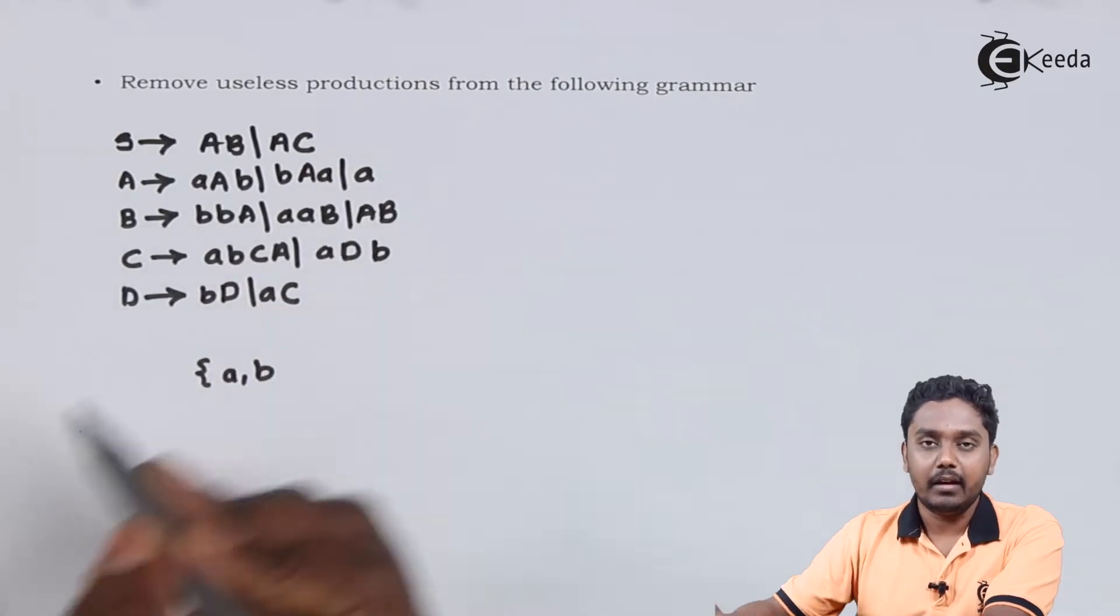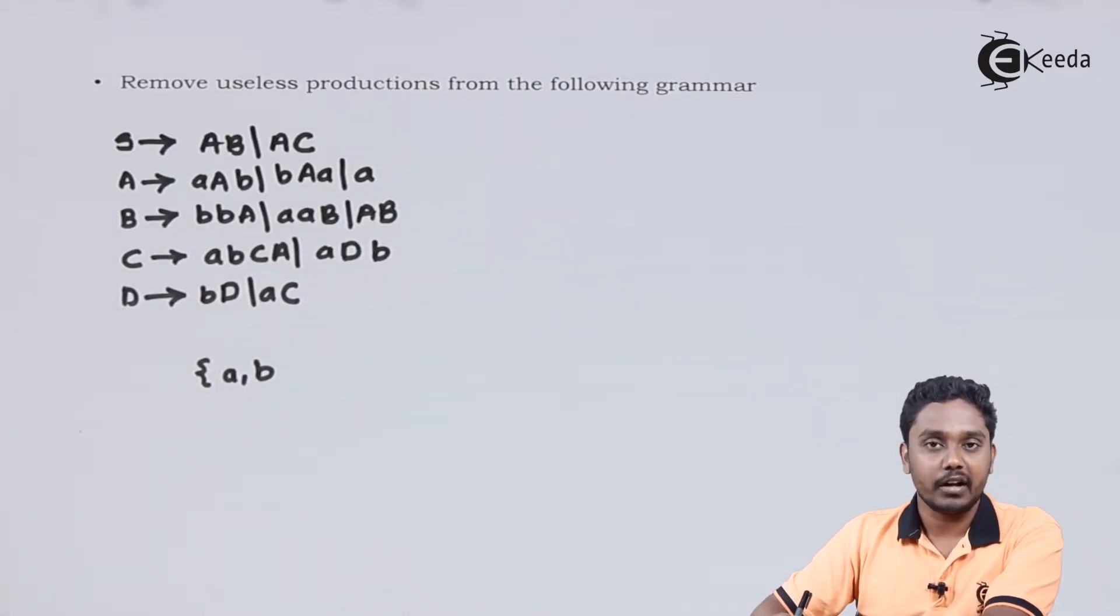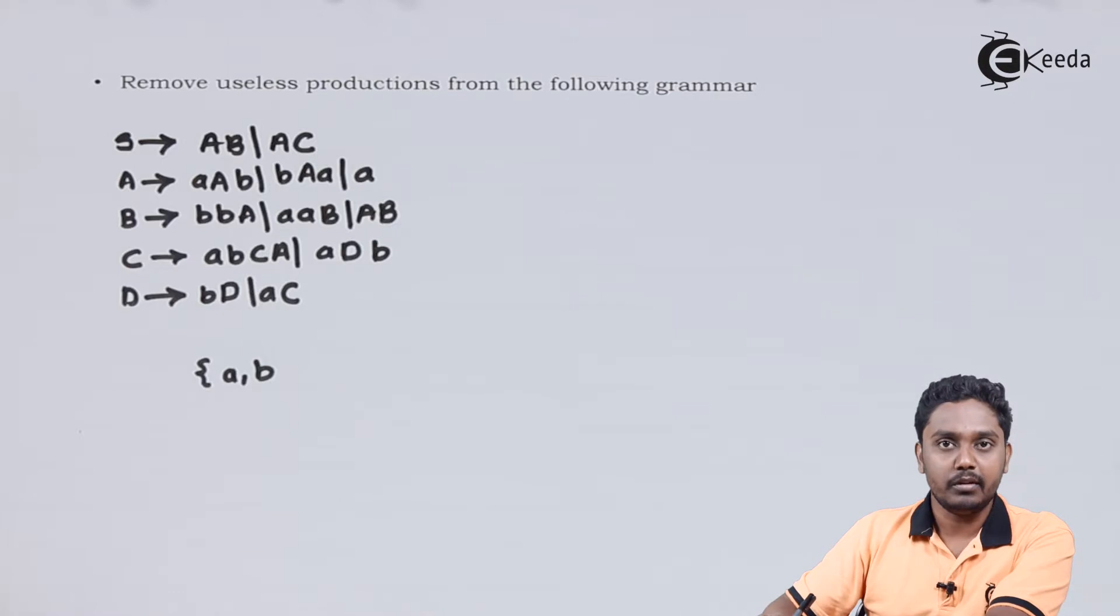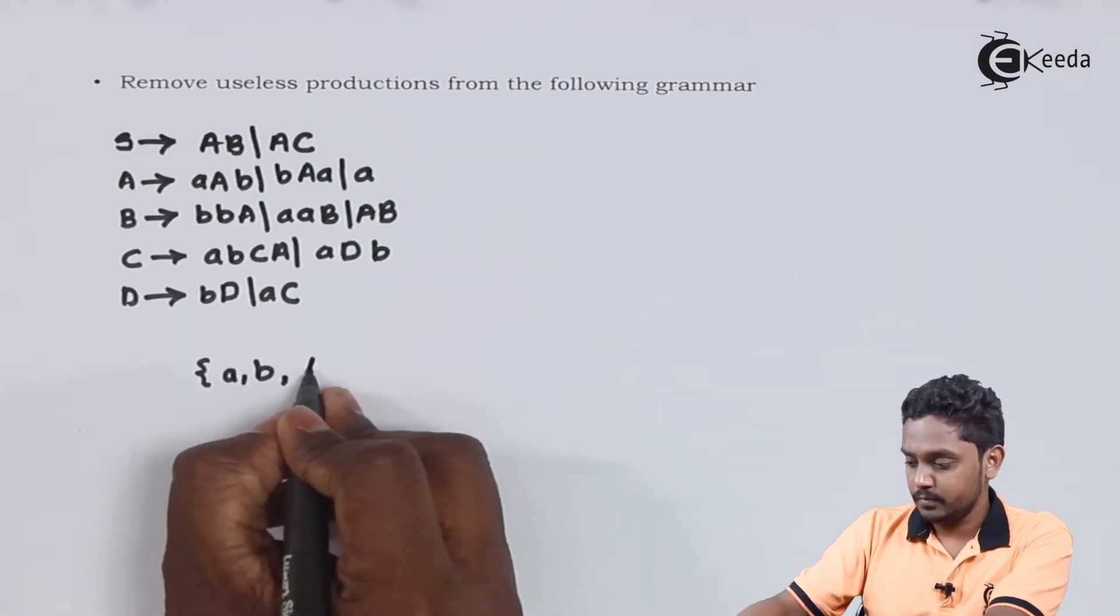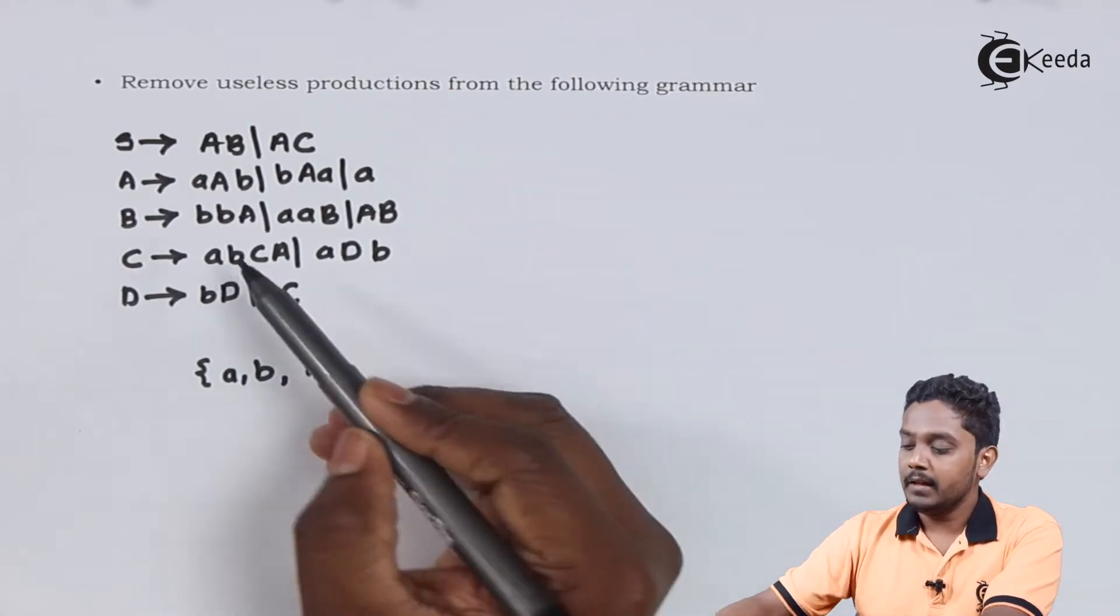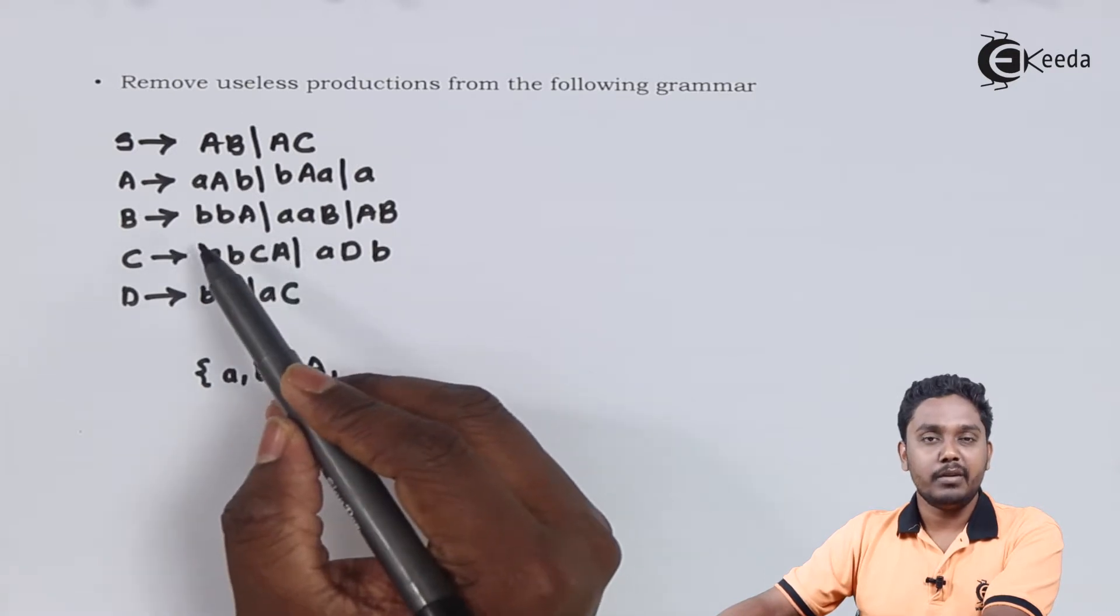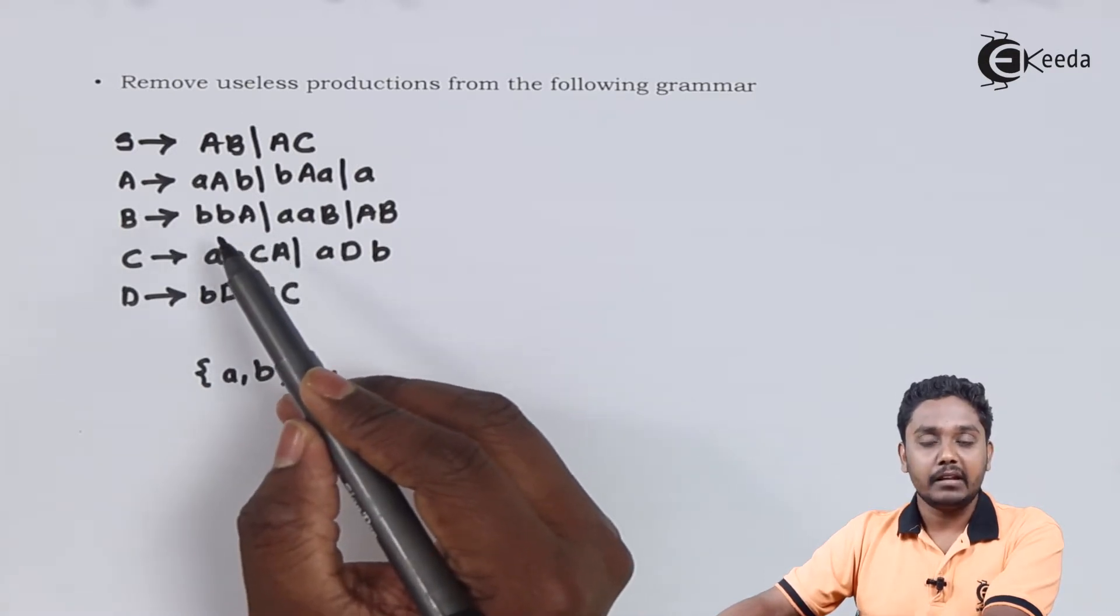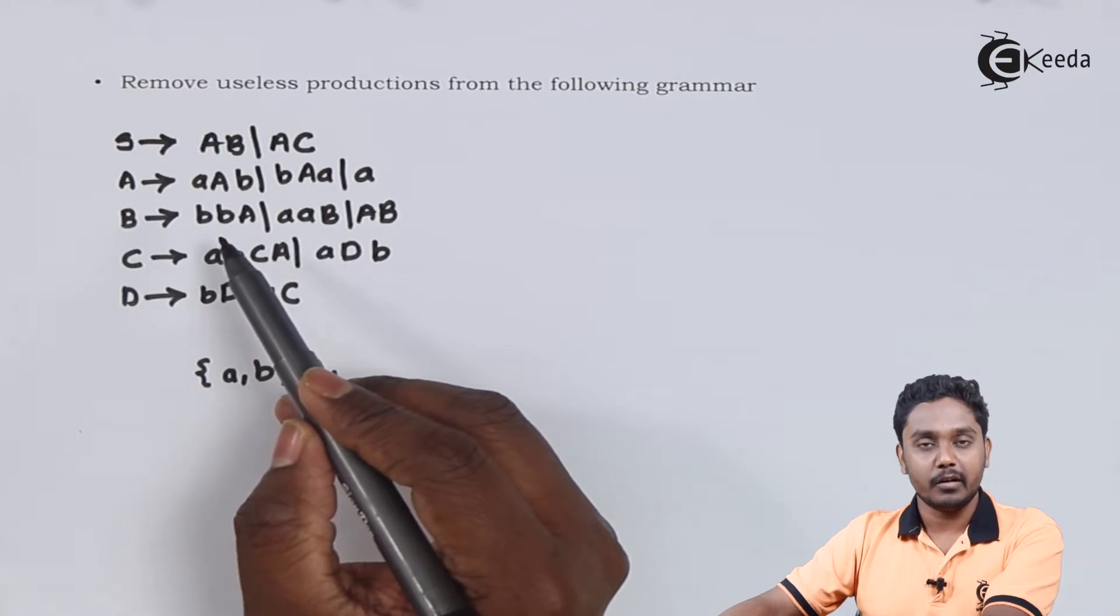A is producing A, hence capital A must be a derivable non-terminal. A is derivable and B is producing BBA, and hence B is also some non-terminal which produces some terminal.